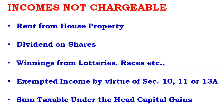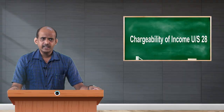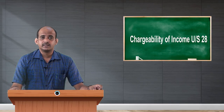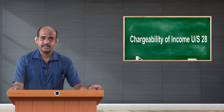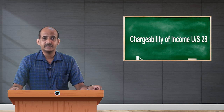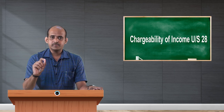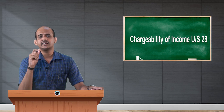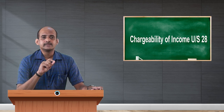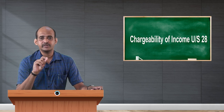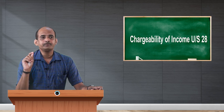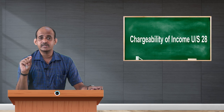The next category is exempted income by virtue of section 10, 11, or 13A. Section 10 is known as tax-free income or exempted income. Under section 10, the incomes which are exempted, under section 11 the incomes which are exempted, or section 13A which are exempted — though they belong to the source of earning income from business, they are exempted. They cannot be shown as income from section 28 or as business or professional income. These are incomes which are already exempted but have close connection with earning business income or professional incomes. By virtue of section 10, 11, or 13A, they cannot be recorded as income from business or profession.